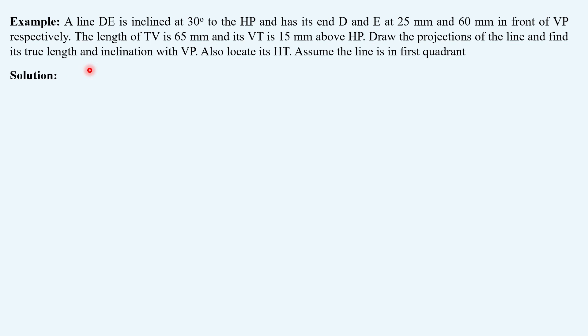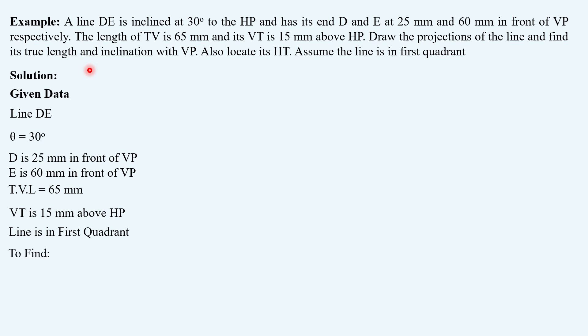Let's extract the given data first. First thing, the name of the line, that is DE. Second, theta is given to us as 30 degrees. Then, point D is 25 mm in front of VP. E is 60 mm in front of VP. Top view length is given as 65 mm. Then, vertical trace is 15 mm above HP. And the line is given in first quadrant.